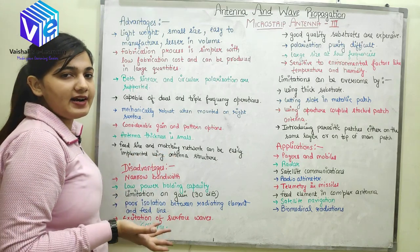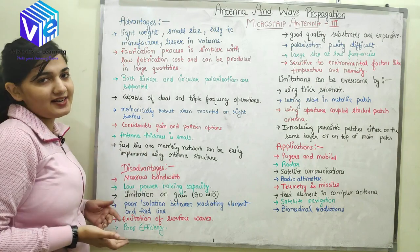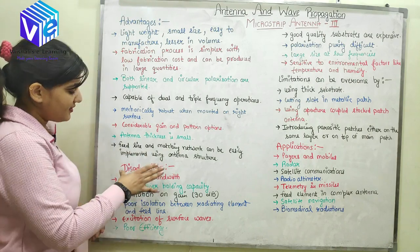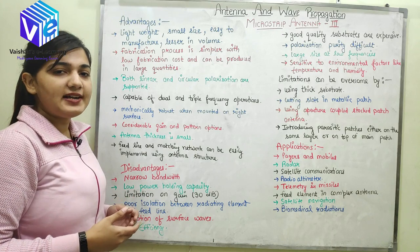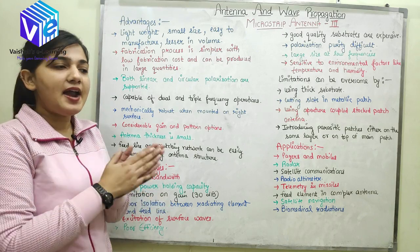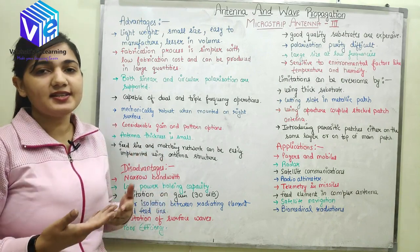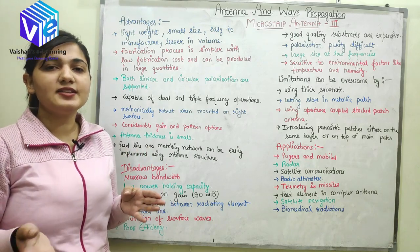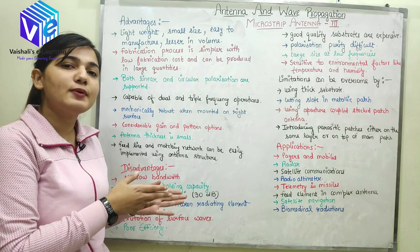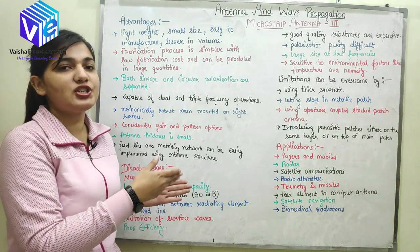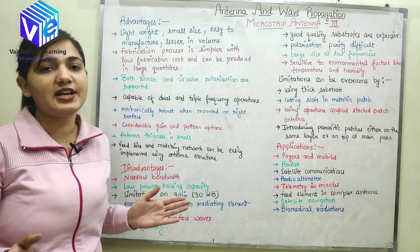Now coming to the disadvantages. The first and major disadvantage is that it has narrow bandwidth — its bandwidth is very narrow. It can't be used for a wide range of frequencies, and when we change our frequency the properties of the antenna would change. Bandwidth refers to the particular range of frequencies over which the antenna's properties remain constant. This range is very limited, so it cannot be used for a large range of frequencies.